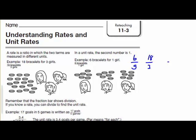We need a unit rate of one. How do I turn three into one? I'm going to divide by three — three over three. And 18 divided by three equals six. So this here is my rate, and this is my unit rate because it's set against one. It's a comparison of one to one. Unit rate: six to one.